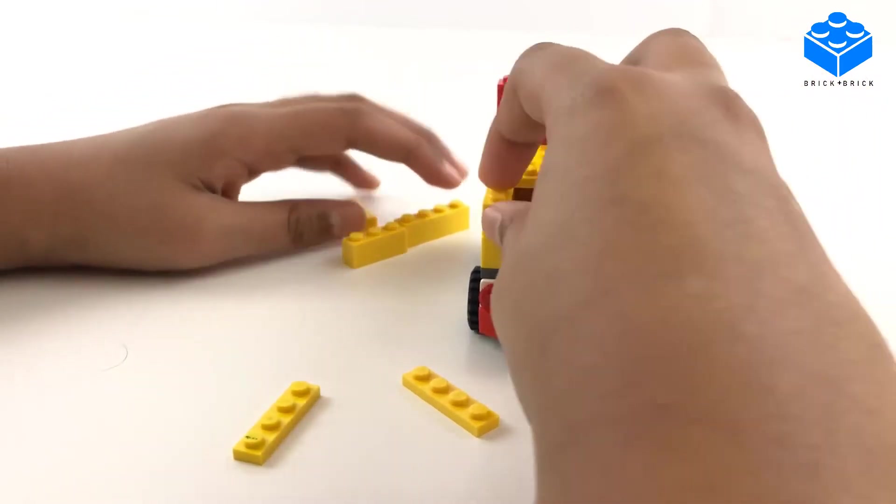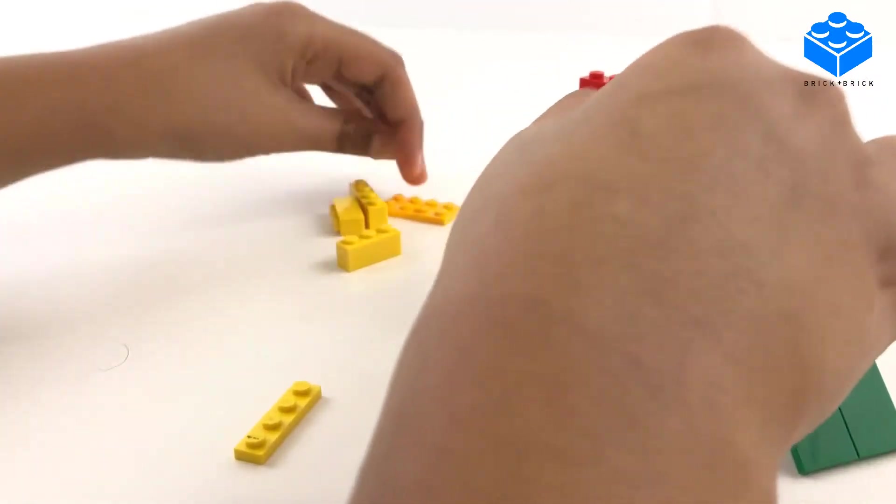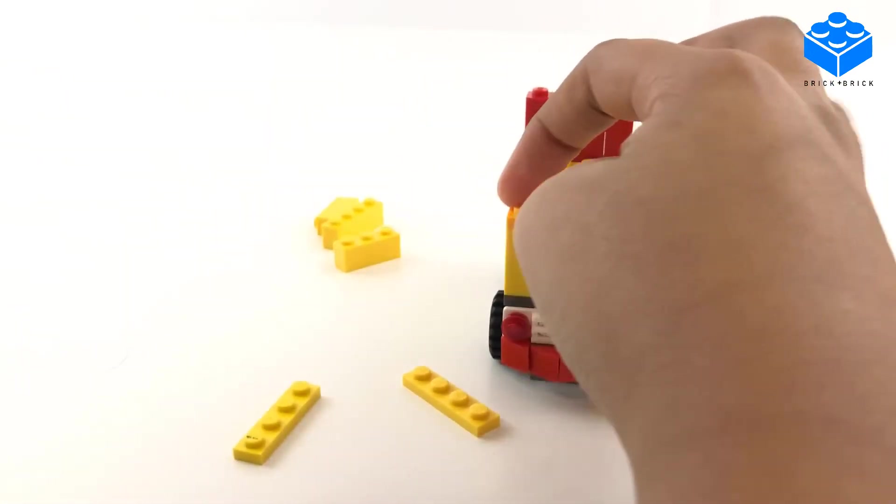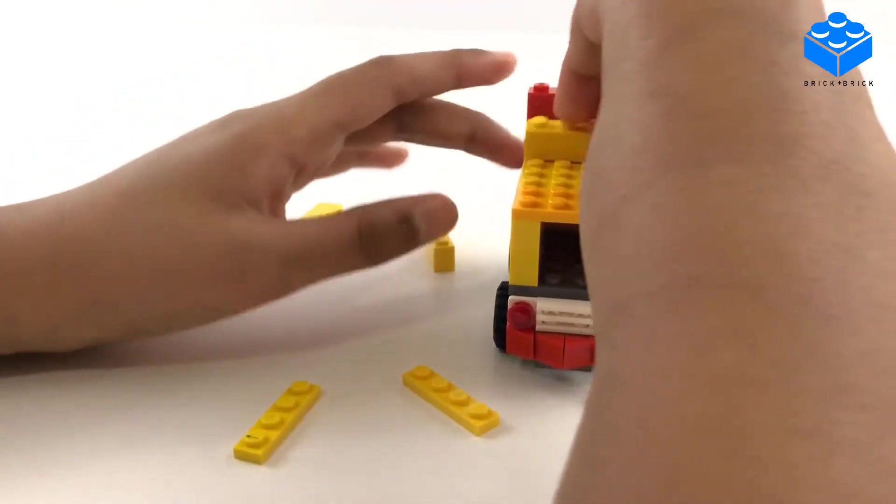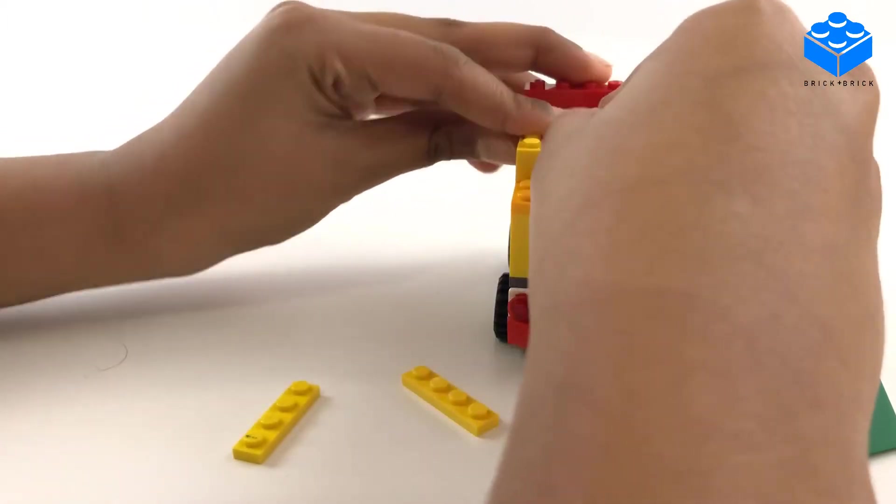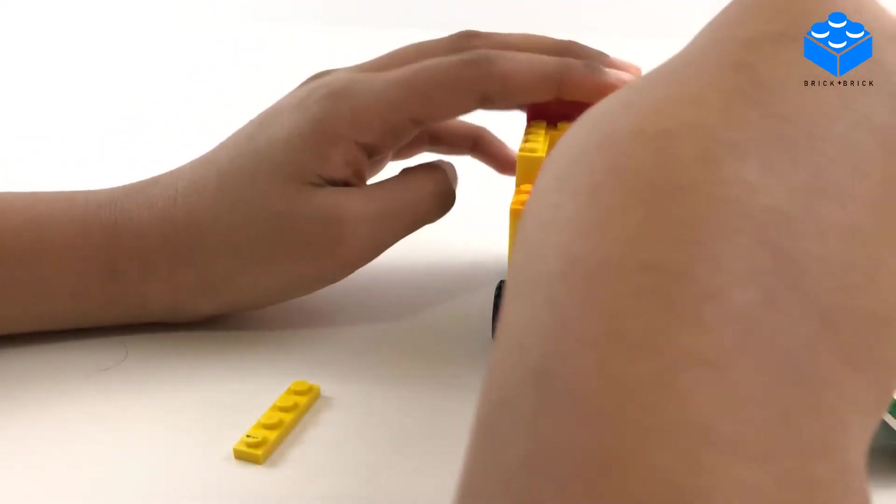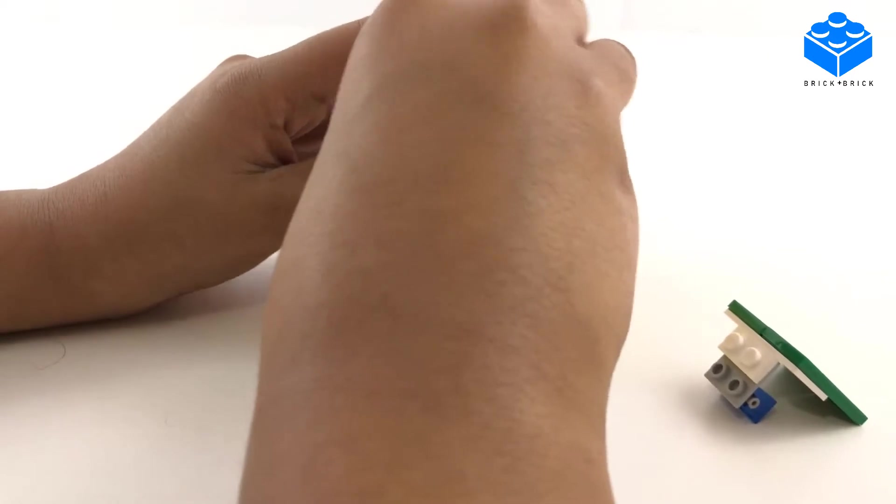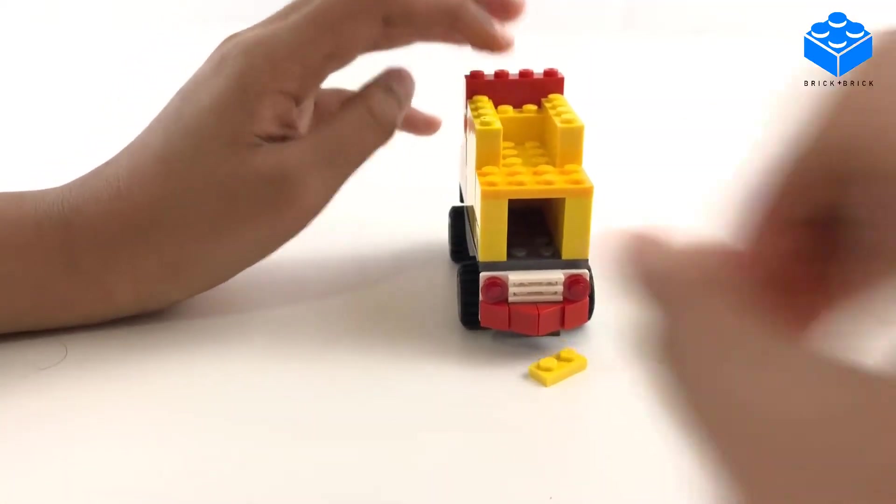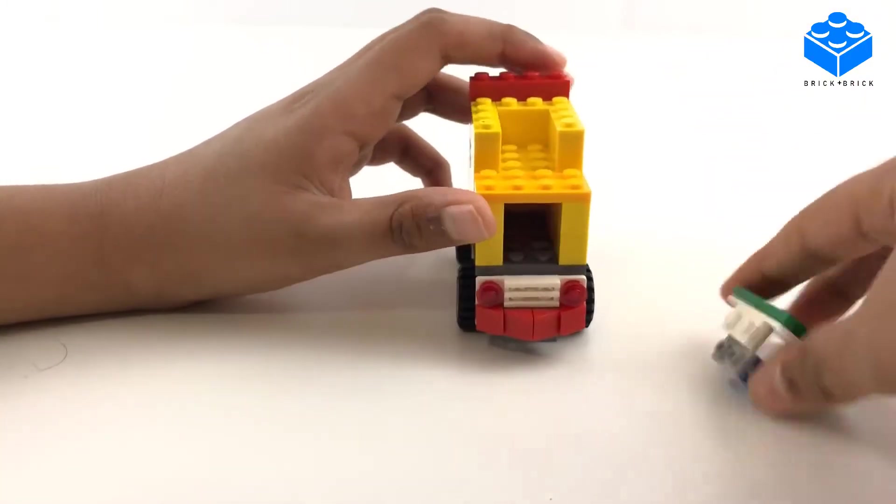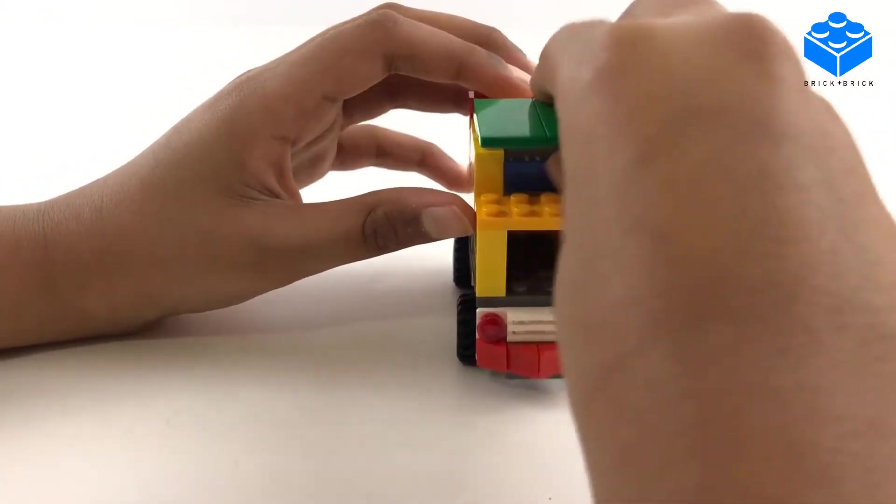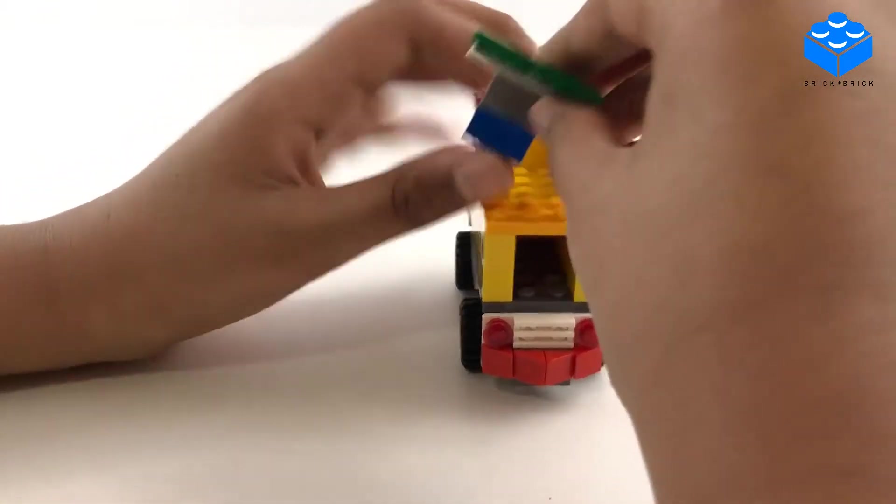Like that, and then stick this two by four flat piece, then we can stick the rest of our pieces in here and onto the top, and then our little design we've made with the door goes on the back of our truck.